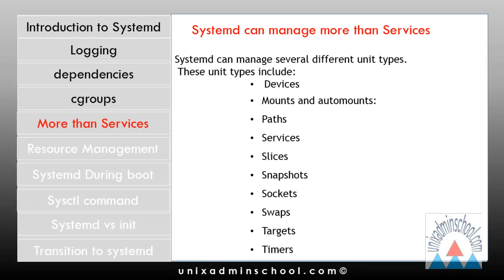Instead of just managing services, systemd can manage several different unit types such as: devices — for creating and using devices; mounts and unmounts — for example, mount a file system upon request or auto-mount a file system based on a request for a file or directory within that file system; paths — check the existence of files and directories and create them as needed; services — start a service daemon and related components; slices — divide up computer resources such as CPU and memory and apply them to selected units; and snapshots — take snapshots of the current state of the system.